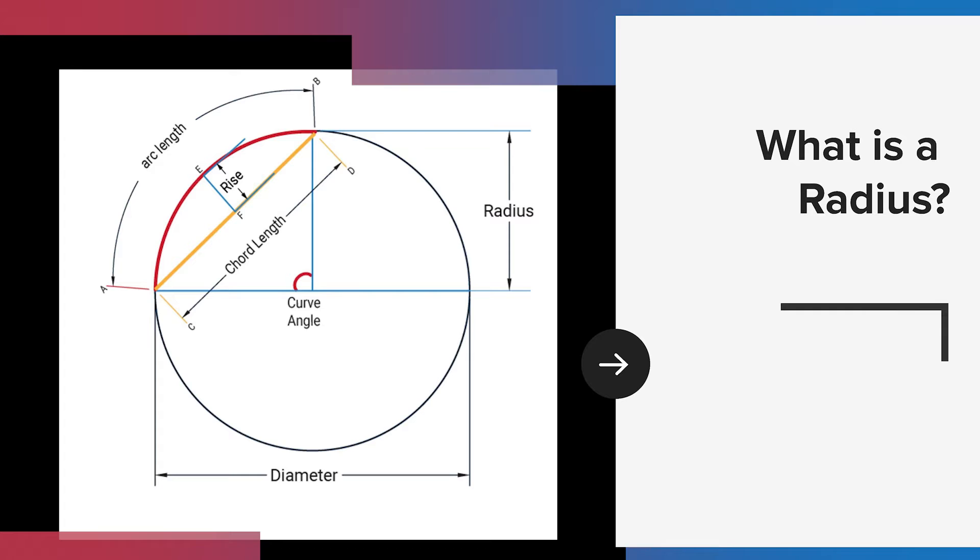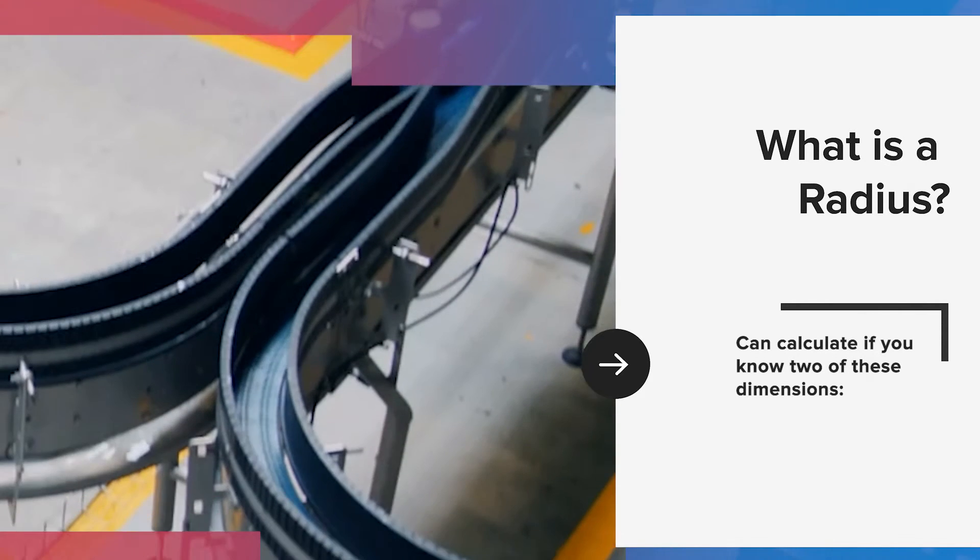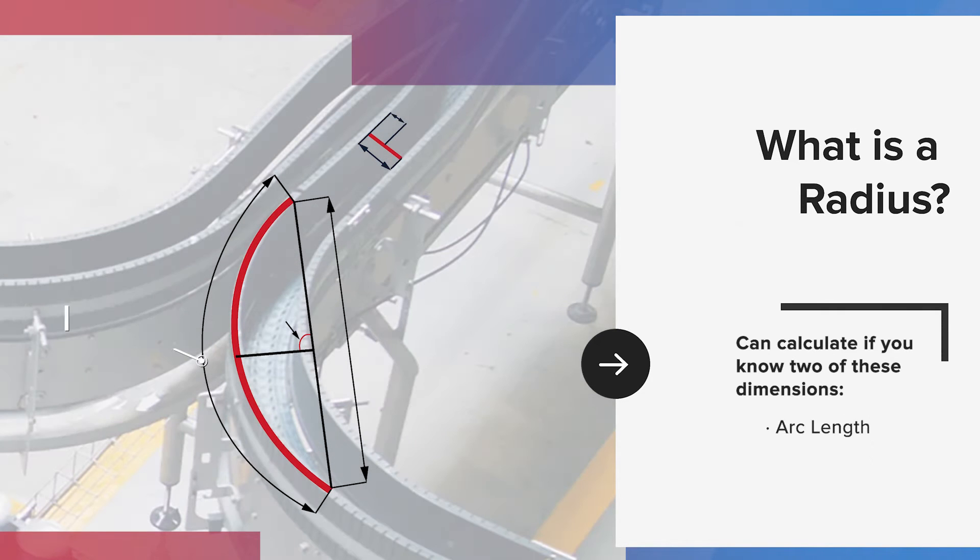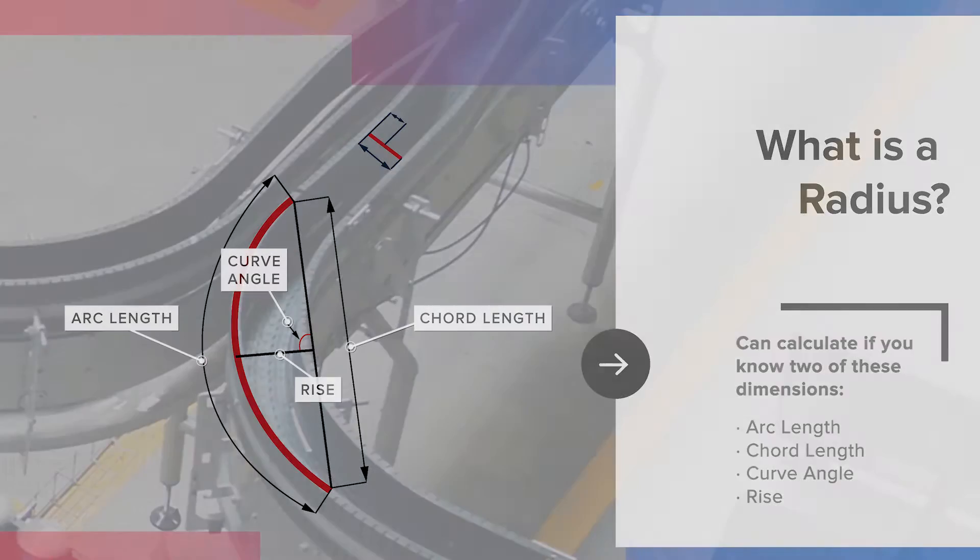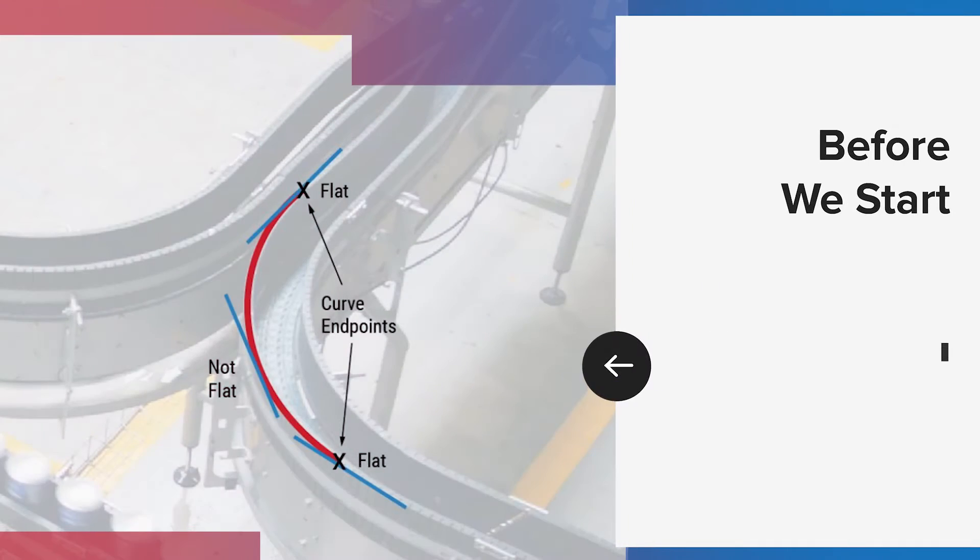Time for geometry class refresher: what is a radius? A radius is a line that goes from the center point of a circle to the edge of the circle. You can calculate the radius if you know at least two of these other dimensions.